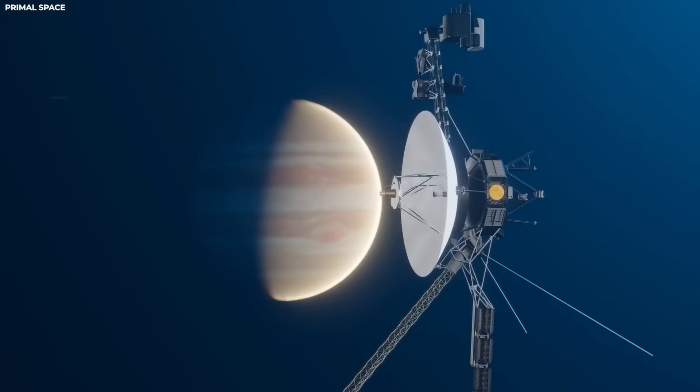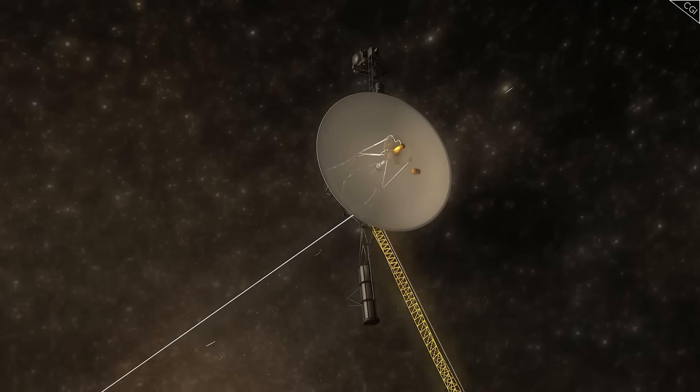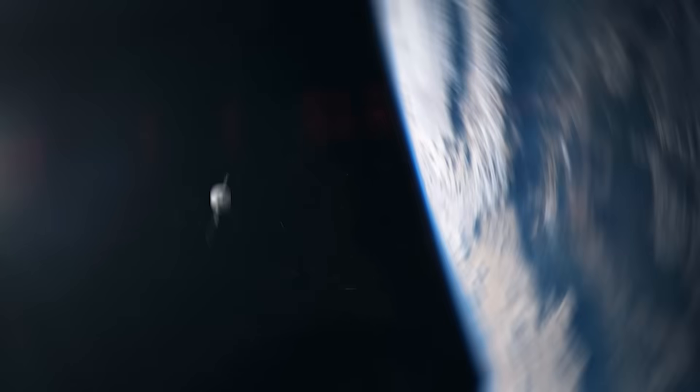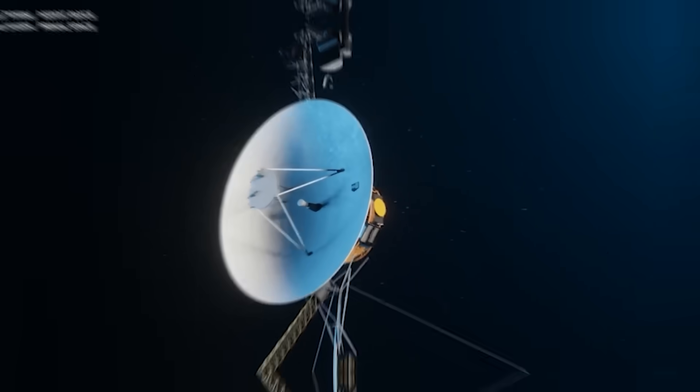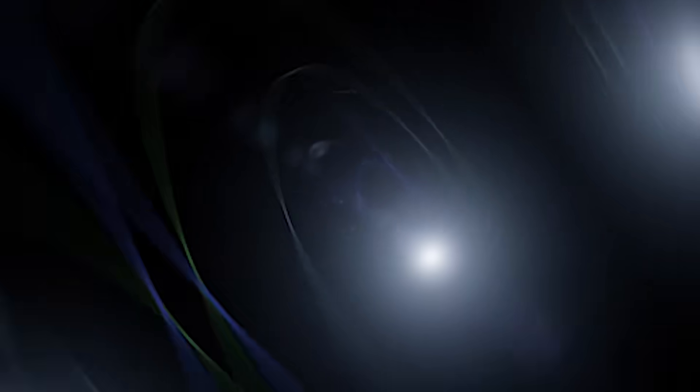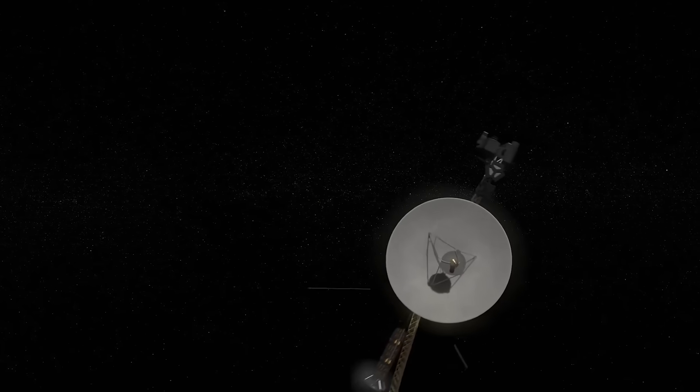That was when the deep space network captured something no one could explain: a second signal. Not from Voyager 1, not from Earth, but from somewhere between them. The transmission matched the probe's original frequency but was stronger, far too powerful to be reflected light or radio bounce. For 19 minutes, it mirrored every Voyager transmission in real time, duplicating its telemetry down to the last bit. It was as though there were two Voyagers communicating, one human, one reflected, separated by billions of kilometers, each echoing the other in perfect synchrony. And then, just as suddenly as it began, it stopped.